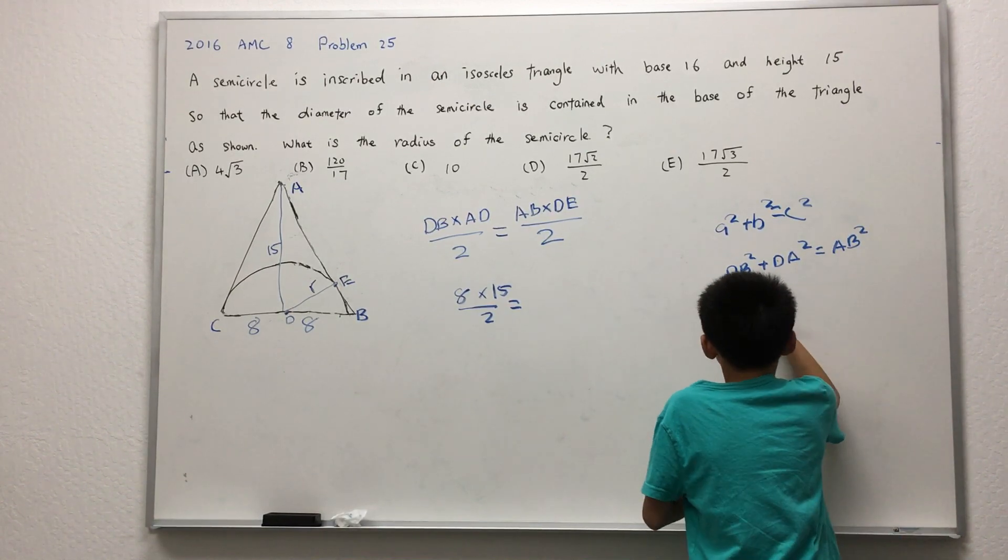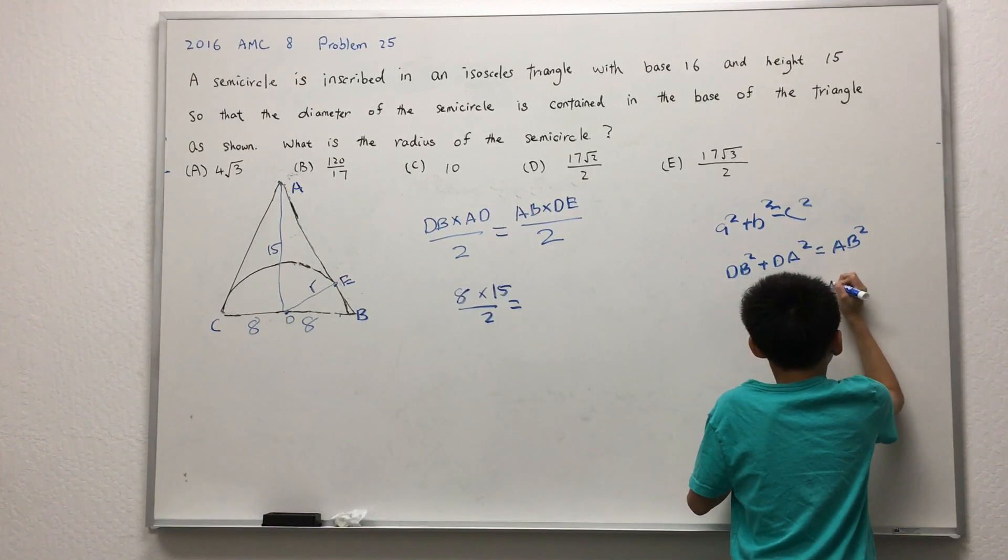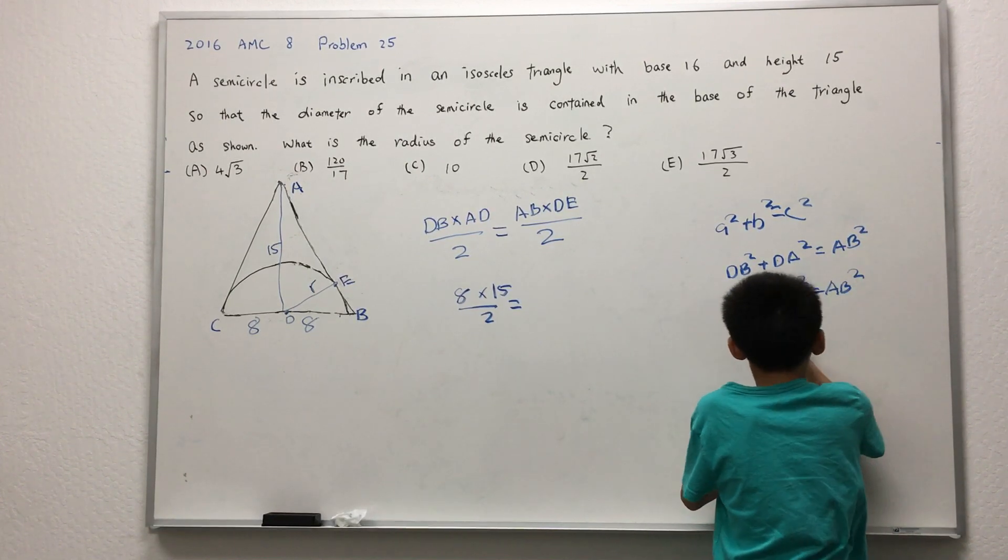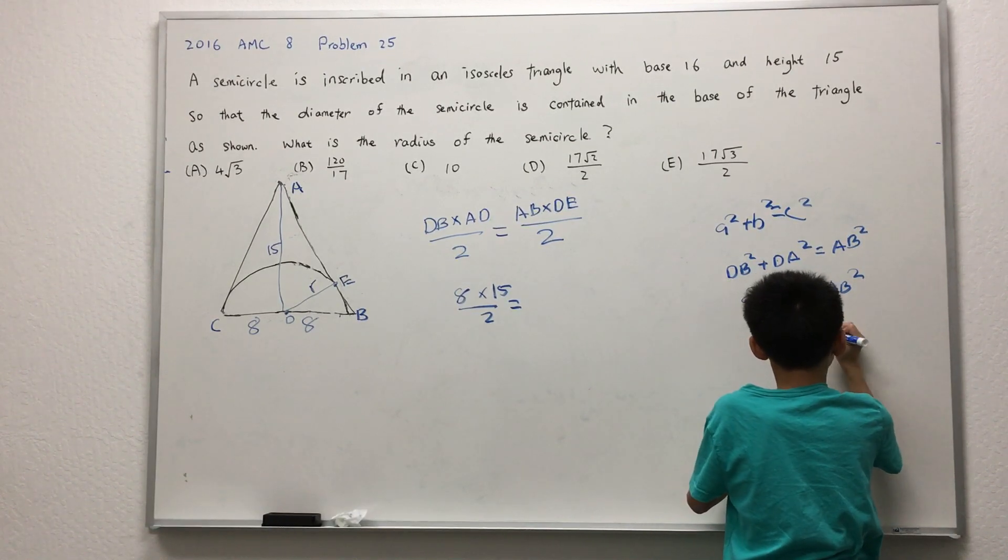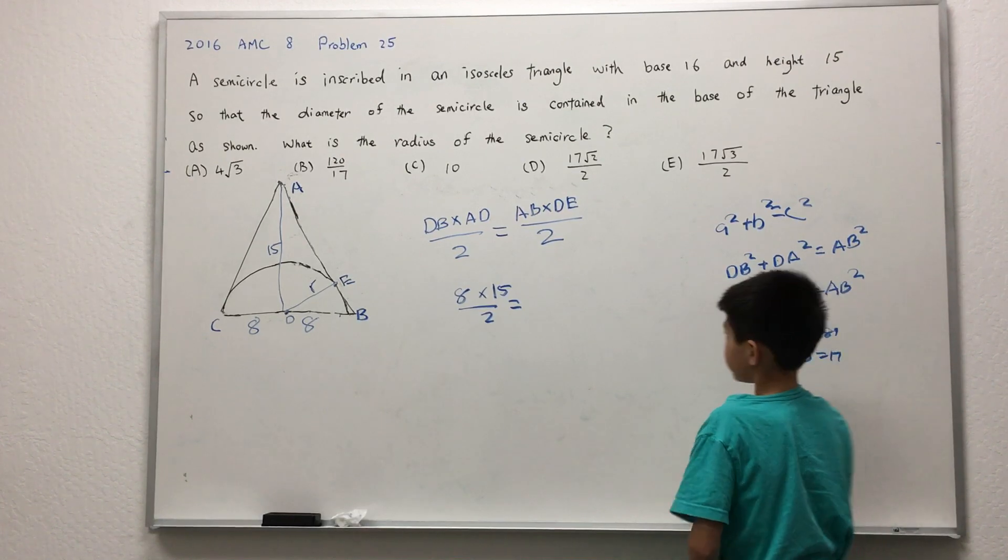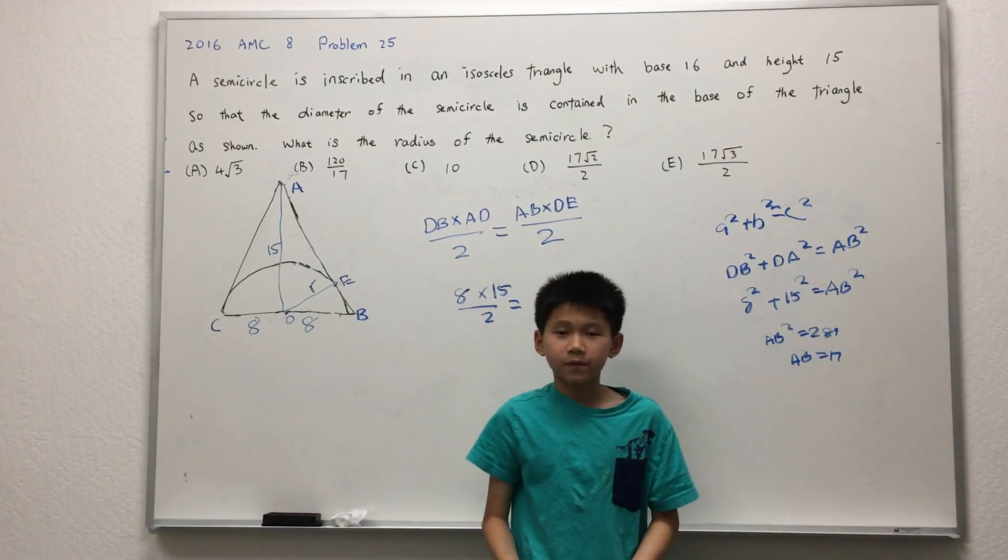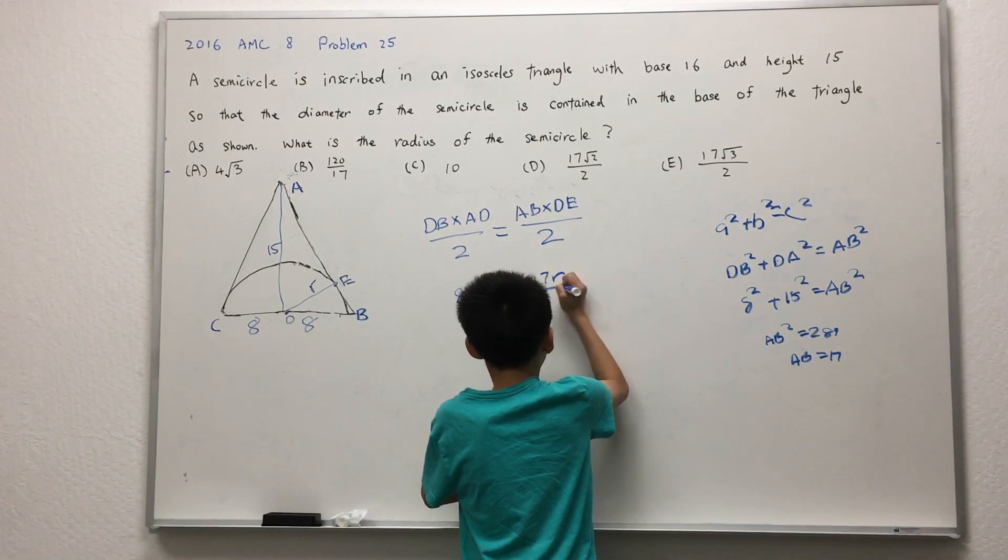We plug in values to get that AB squared is equal to 289, and AB equals 17. We plug the value of AB into this equation, 17, to get 17R over 2.